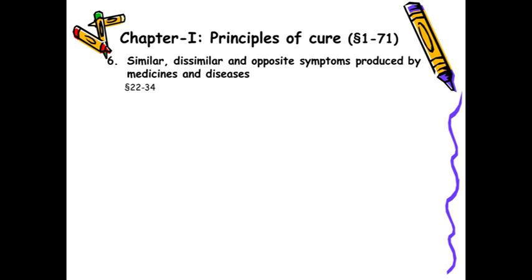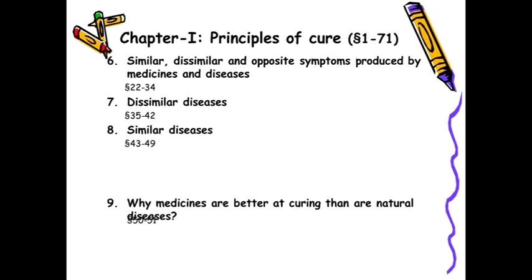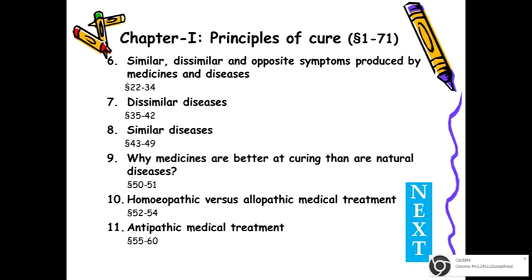Then similar, dissimilar and opposite symptoms produced by medicines and diseases: what is the relationship between two similar diseases — one strong and one weak — two dissimilar diseases, opposite symptoms? All these are discussed at length. More details on dissimilar disease from aphorism 35 to 42, and about similar disease from aphorism 43 to 49 with examples. Why medicines are better at curing than natural diseases — that is aphorism 51-52.